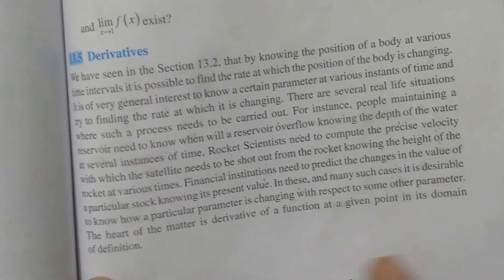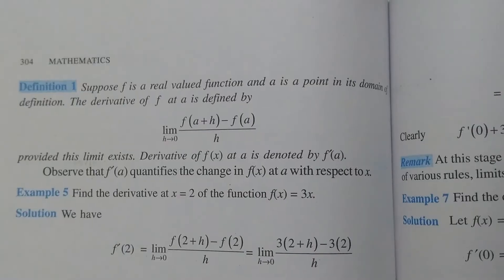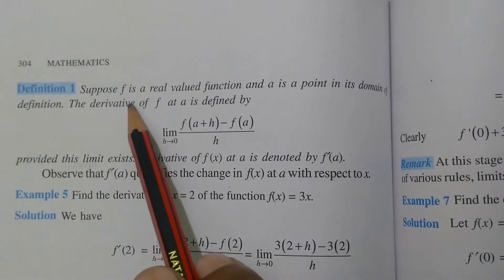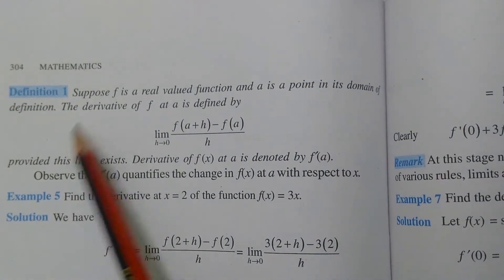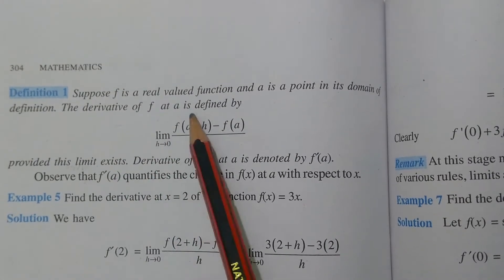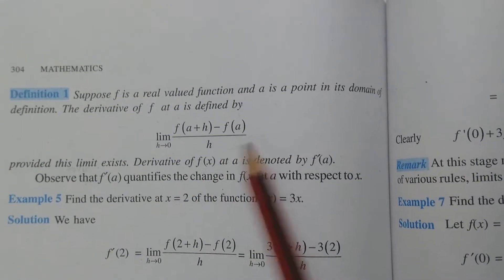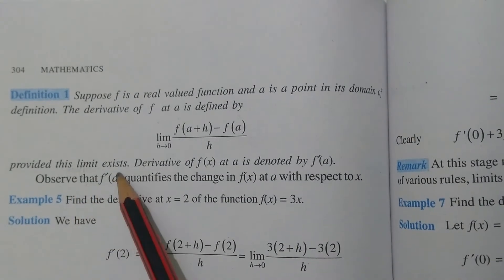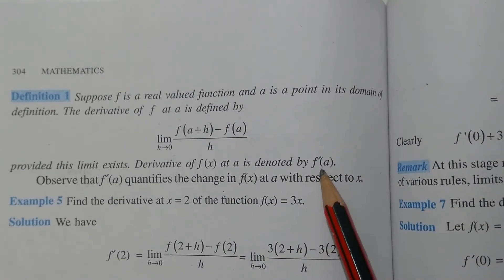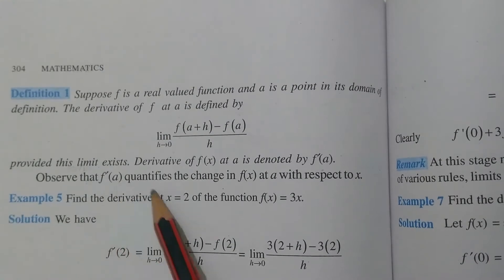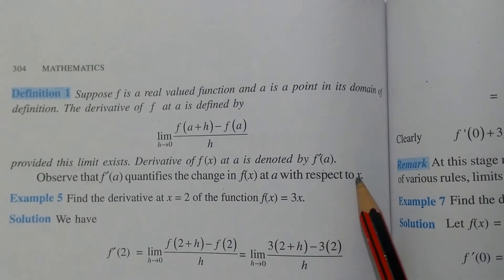The heart of the matter is the derivative of a function at a given point in its domain of definition. Now we shall learn the definition from the textbook. Definition 1: Suppose f is a real valued function and a is a point in its domain of definition. The derivative of f at a is defined by limit h approaches to 0 of f(a+h) minus f(a), whole divided by h, provided this limit exists. Derivative of f(x) at a is denoted by f'(a). f'(a) quantifies the change in f(x) at a with respect to x.